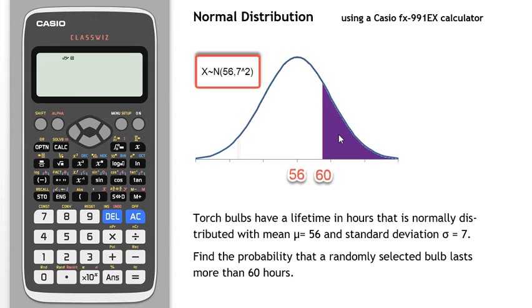Torch bulbs have a lifetime in hours that is normally distributed with mean μ = 56 and standard deviation σ = 7. Find the probability that a randomly selected bulb lasts more than 60 hours. So we're looking for the probability of a bulb being in this purple region of the normal distribution.